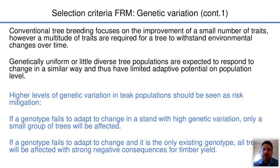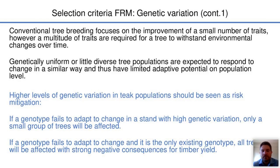Conventional tree breeding focuses on the improvement of a small number of traits; however, a multitude of traits are required for a tree to withstand environmental changes over time. Genetically uniform or little diverse tree populations are expected to respond to change in a similar way and have limited adaptive potential at population level. Higher levels of genetic variation in teak populations should be seen as risk mitigation: if a genotype fails to adapt to change in a stand with high genetic variation, only a small group of individuals will be affected. However, if a single genotype is the only one present and it fails to adapt, all trees will be affected, with strong negative consequences for population health and timber yields.